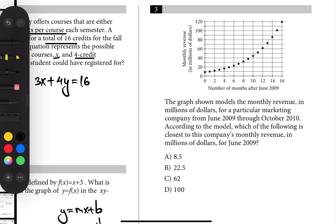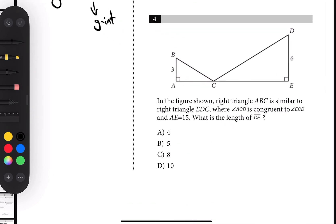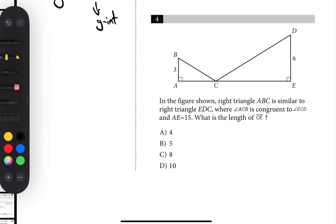The third one: which of the following is closest to the company's monthly revenue in millions of dollars for June 2009? The x-axis represents the number of months after June 2009, so for June 2009 that's zero. When x is zero, the y-intercept is approximately a little bit less than 10, and one of the choices given is 8.5.